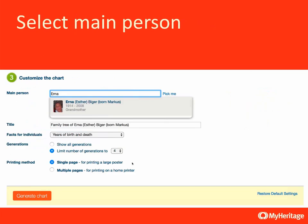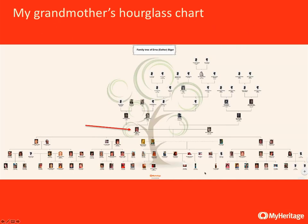Here I select a person as the root of the hourglass — in this case, my grandmother. After a few seconds, the chart shows my grandmother with an arrow pointing to her. Below her are her children, grandchildren, and great-grandchildren. Above her, I see her ancestors and those of her husband, my grandfather. It's a chart that shows the descendants and the ancestors of her children — my mother and her brothers. This is a great chart for family reunions, showing everything about a person: where they came from and what they've left behind.